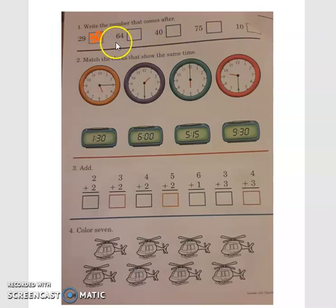Alright. So, this number is what? 64. What comes after 64? 65. What is this number? 40. What comes after 40? 41. What is this number? 75. What comes after 75? 76. And this is the number 10. What comes after the number 10? 11.